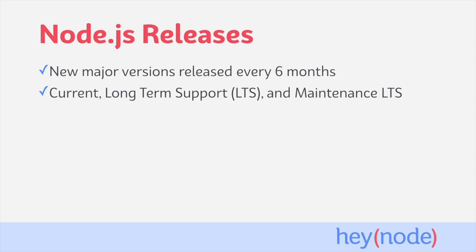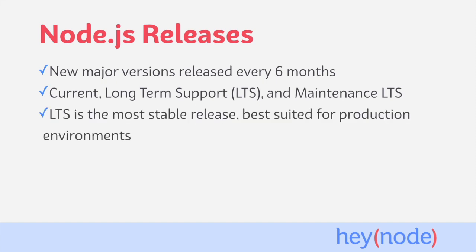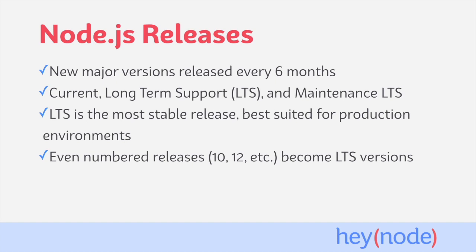When you go to install Node.js, you'll have plenty of different versions to choose from. You're likely to see versions referred to as Current, Long-Term Support or LTS, and Maintenance LTS. The Long-Term Support or LTS release is the most stable release, which is best suited for production environments. An LTS release is considered to be stable software. While it is still considered an active LTS release, it'll receive security updates, critical bug fixes, and some non-breaking new features. Although a new version of Node.js comes out every six months, only the even-numbered versions are destined to become LTS releases.